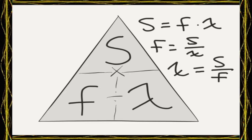That's how you calculate speed: frequency times wavelength. Frequency: speed divided by wavelength. Finally wavelength: speed divided by frequency.